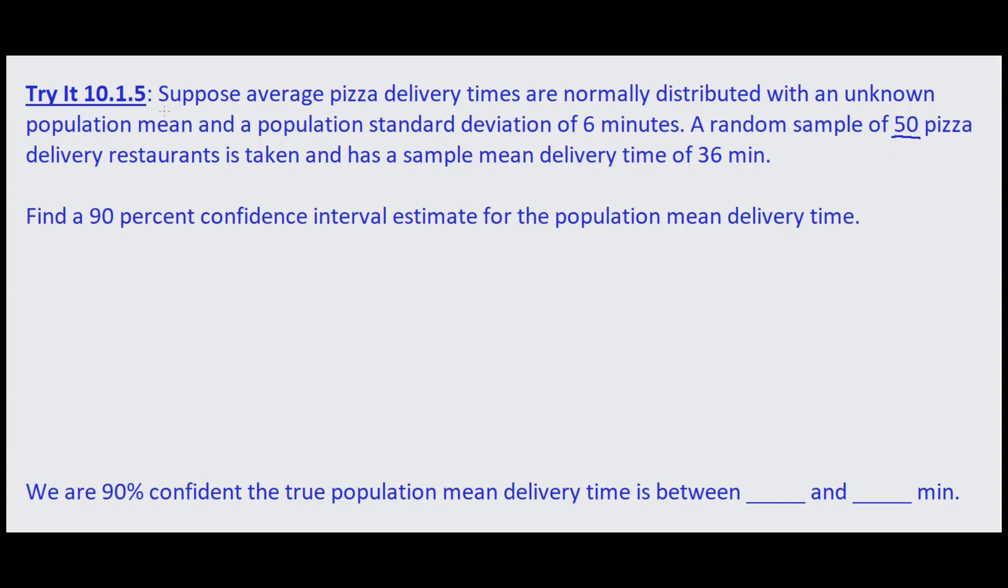So everything else is the same. We're assuming average pizza delivery times are normally distributed with an unknown population mean and a population standard deviation of 6 minutes. That's the same.